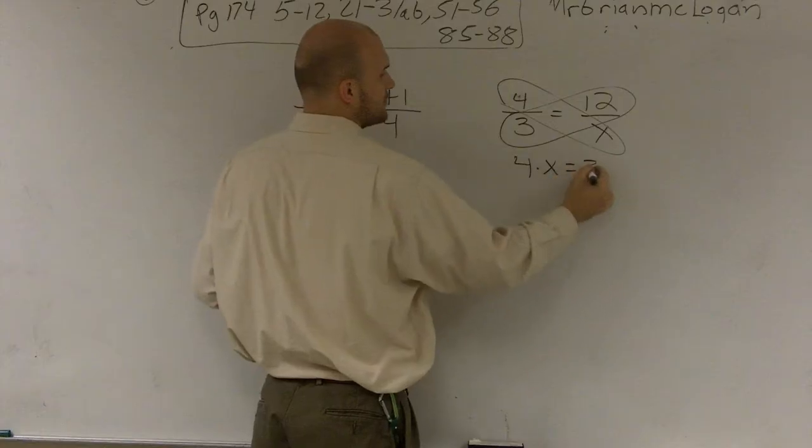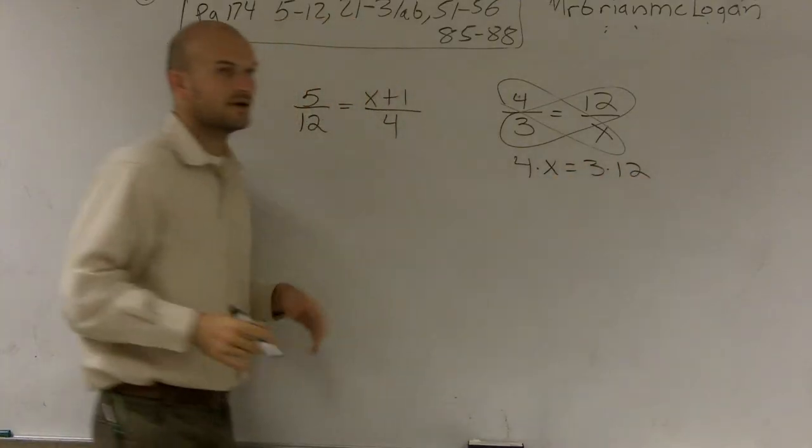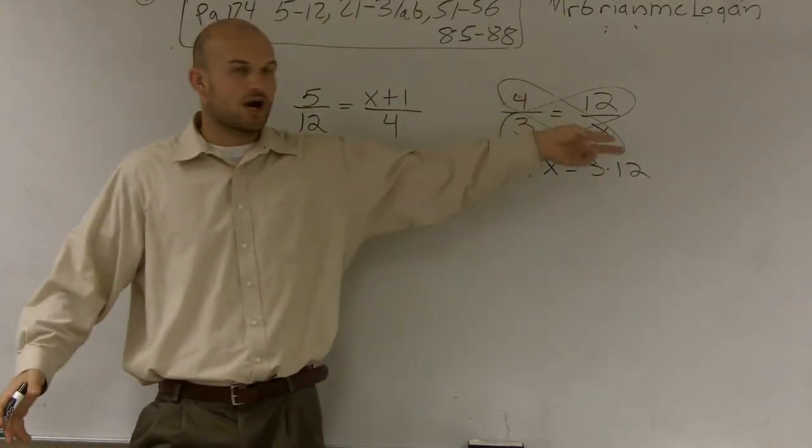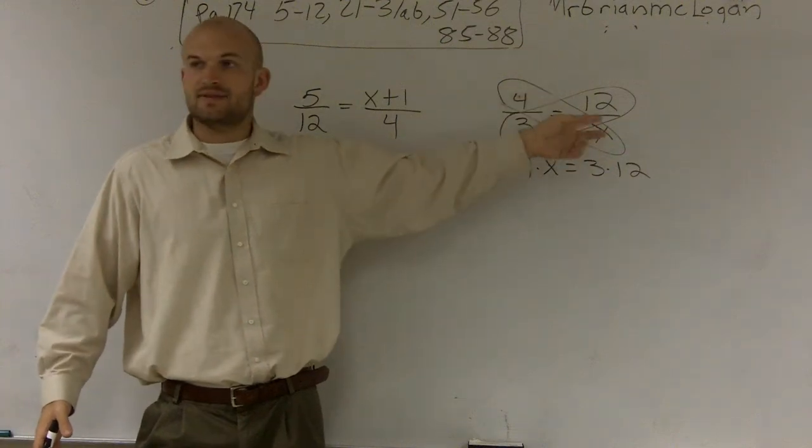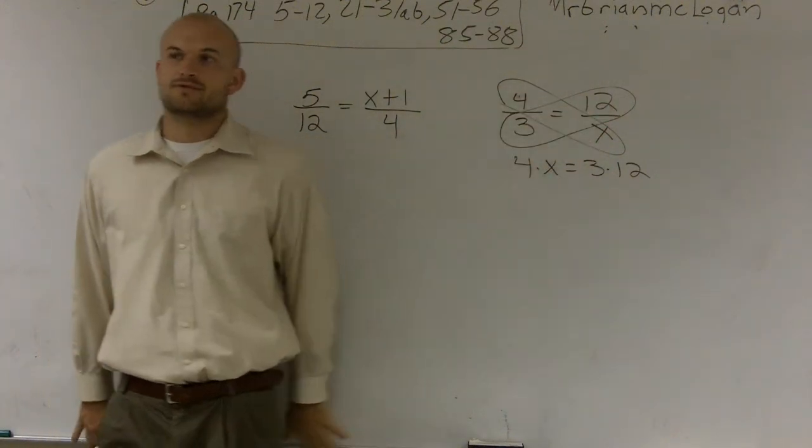You did 4 times x equals 3 times 12, right? And you knew you just took the cross product of two of them, you multiplied them and that equaled the cross product of the other ones.